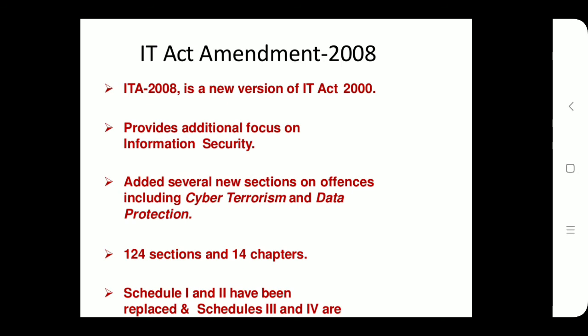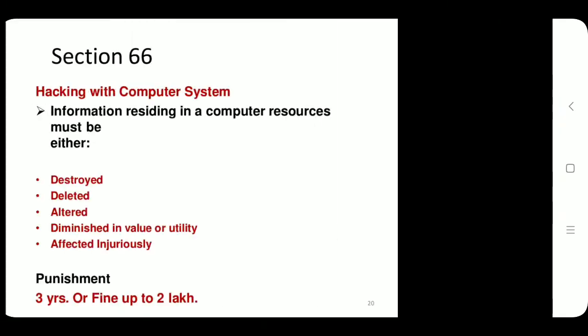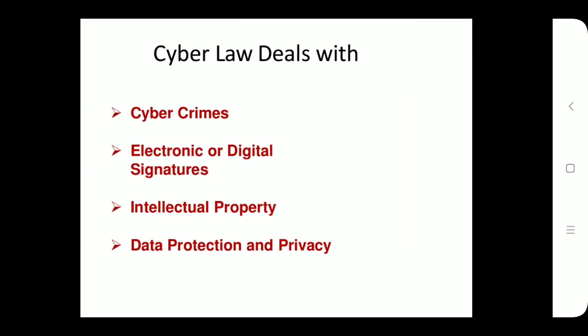Electronic and digital signatures are used to authenticate electronic records. A digital signature is one type of electronic signature. Digital signatures satisfy three major legal requirements: signature authentication, message authentication, and message integrity. The technology and efficiency of digital signatures makes them more trustworthy than handwritten signatures, and these issues are discussed in detail in various articles.